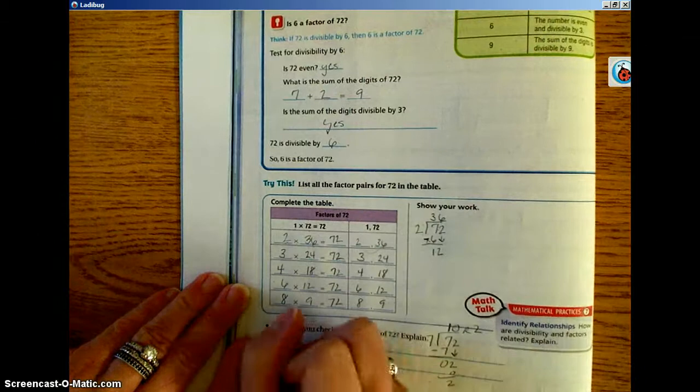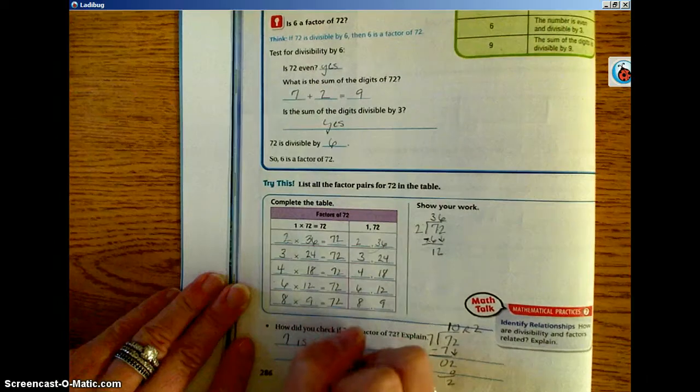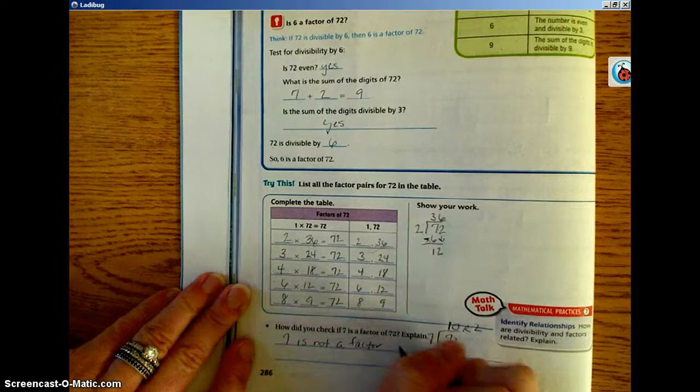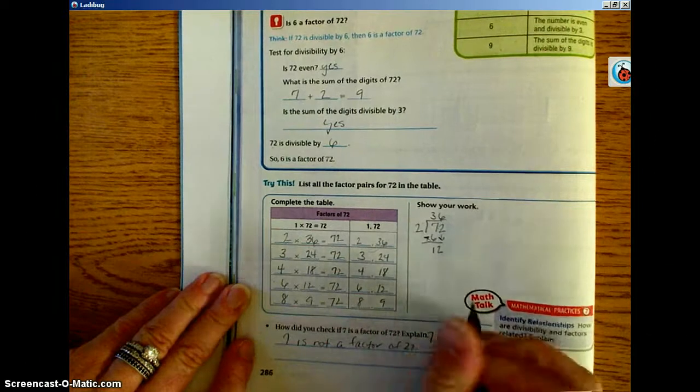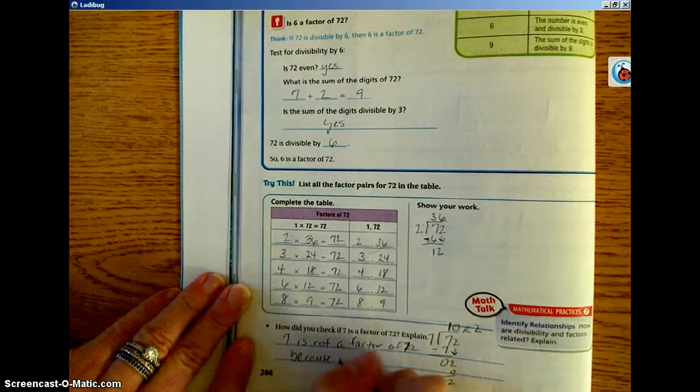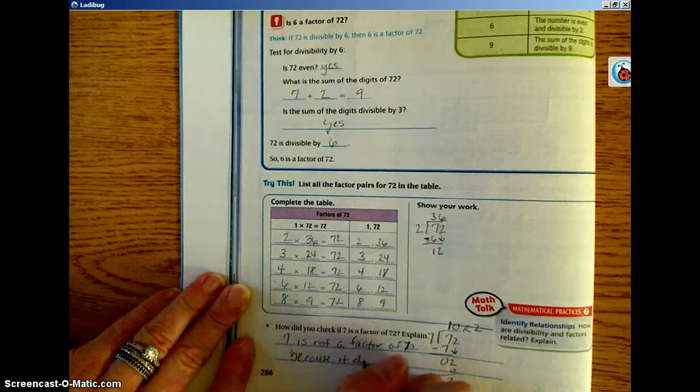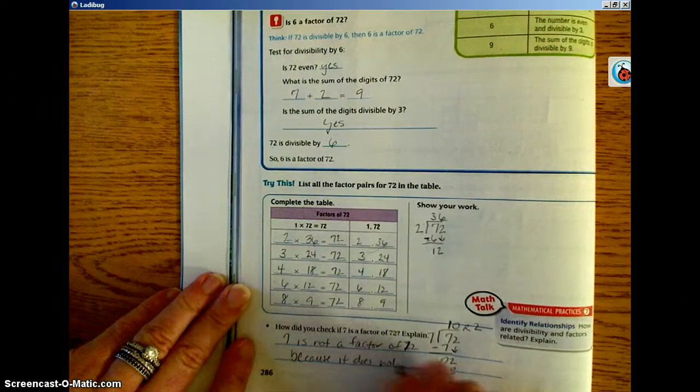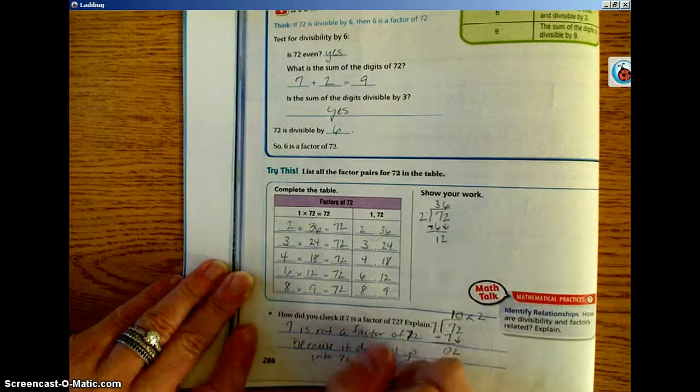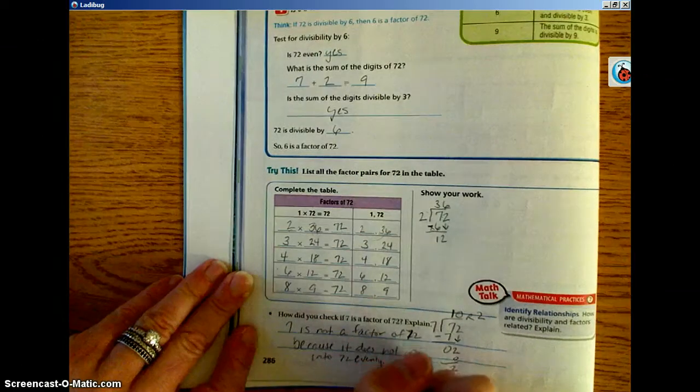7 is not a factor of 72 because it does not go into 72 evenly.